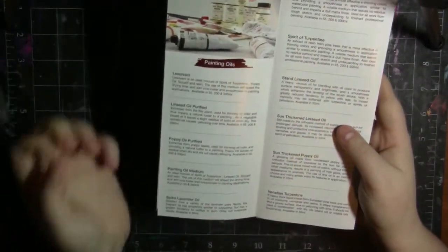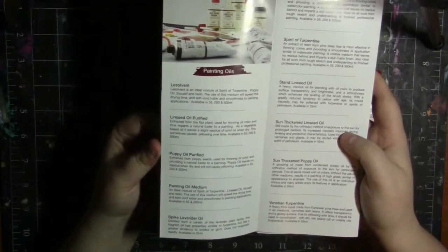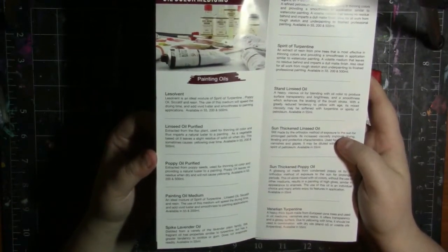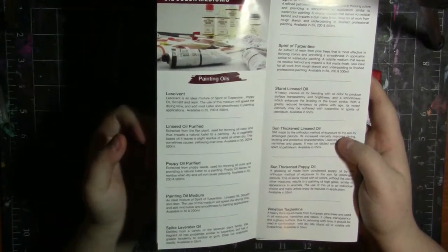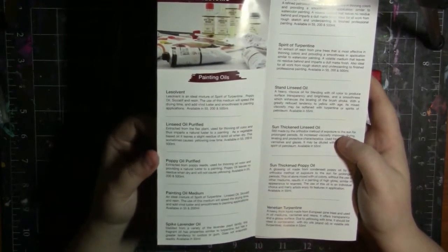This is what I wanted to tell you guys about. First off, I want to read to you about the linseed oil purified. It says that it's extracted from the flax plant, used for thinning oil color, and thus imparts a natural luster to a painting. As a vegetable based oil, it leaves a slight residue of solid oil when dry. This sometimes causes yellowing over time. Available in 55, 200, and 500 milliliters.